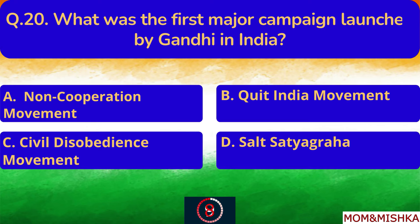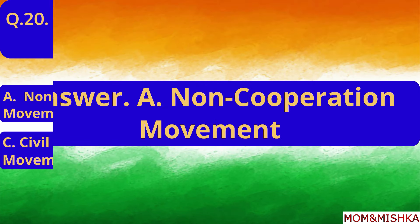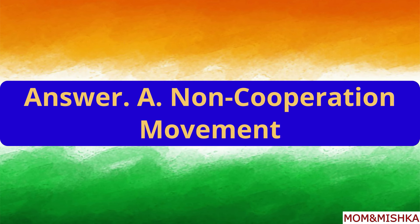What was the first major campaign launched by Gandhi in India? It was the Non-Cooperation Movement. Option A.